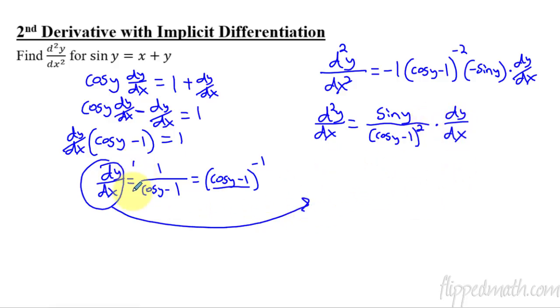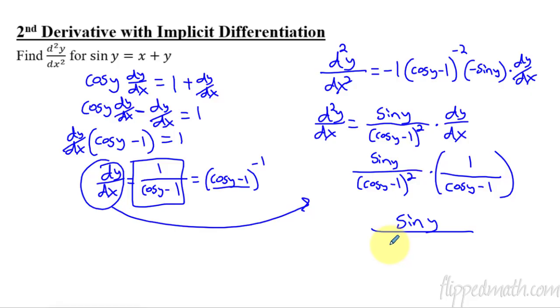So we are literally just substituting in this whole thing right there. So this becomes sine y over cosine y minus one quantity squared times dy dx. We substitute in what it equals, which is just one over cosine y minus one. That's dy dx. And then you're done. Well, I mean, simplify. Sine y over cosine y minus one quantity cubed now, since there's three of them. And so that is the second derivative with implicit differentiation.